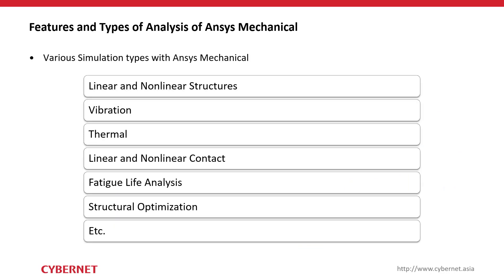There are various simulation types available in ANSYS Mechanical: linear and nonlinear structural analysis, static and dynamic analysis, vibration analysis, thermal analysis, fatigue analysis to evaluate structural life, and structural optimization using topology optimization. There are many more features and simulation types available — if there is a specific analysis you'd like to know about that isn't covered, please write it in the chat box.